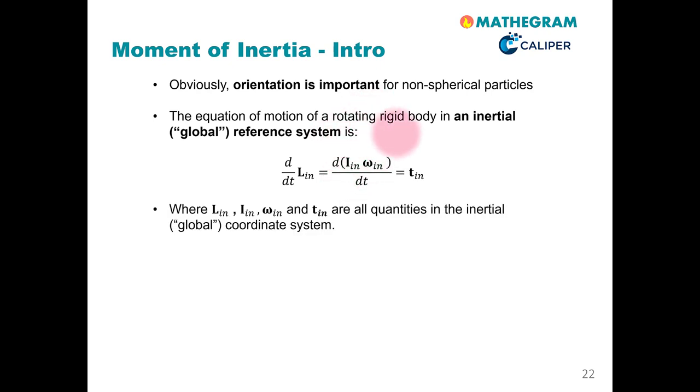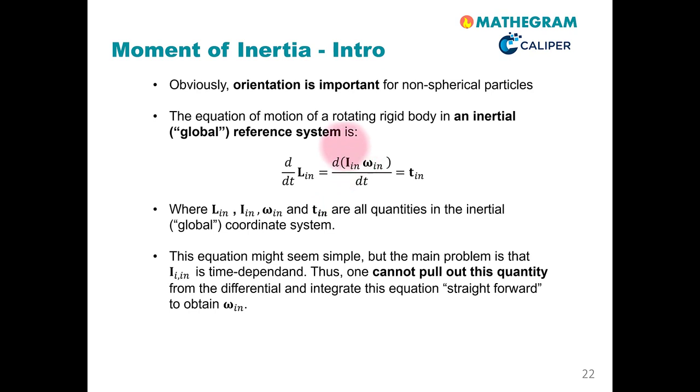If we want to solve this equation, we can only solve for the time evolution of the total angular momentum, but not for this angular velocity ωi here. The core mathematical problem is that we cannot pull out this moment of inertia in the inertial global reference system from the differential. This does not allow for straightforward integration of the equation to obtain ωi.